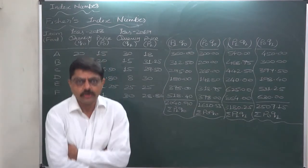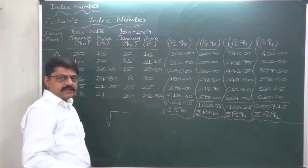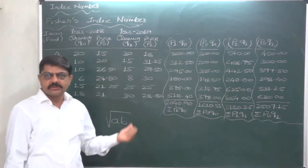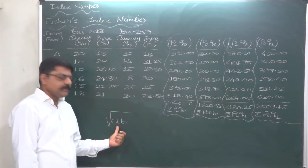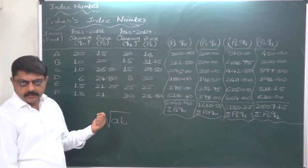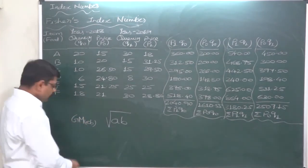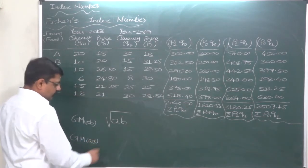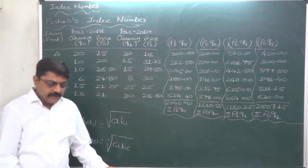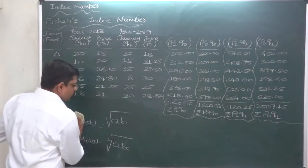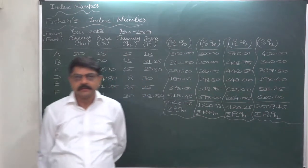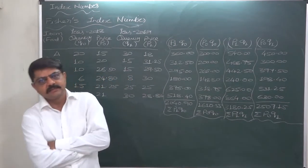Technically, what is geometric mean? Geometric mean means if we multiply n number of items and take the nth root, that is called the geometric mean of n items. For two items a and b, we multiply them and take the square root to get their geometric mean. Similarly, for three items a, b, and c, the geometric mean is the cube root of their product, and so on. Since we have two index numbers — Laspeyre's and Paasche's — we take only the square root. So Fisher's index number is the geometric mean of Laspeyre's and Paasche's index numbers.